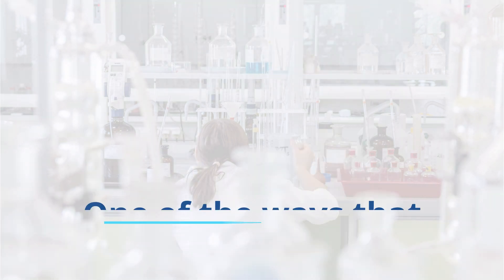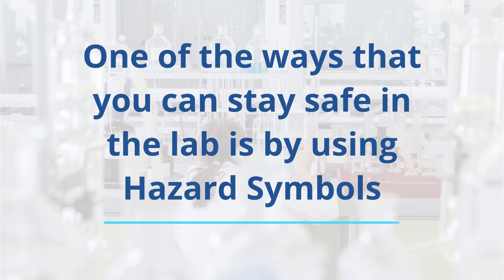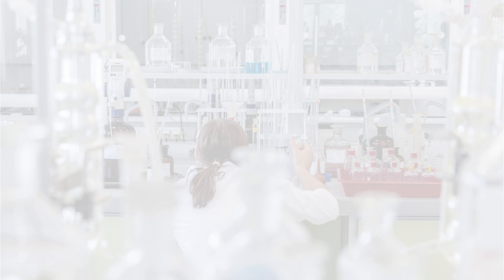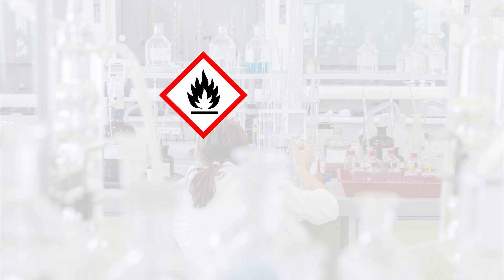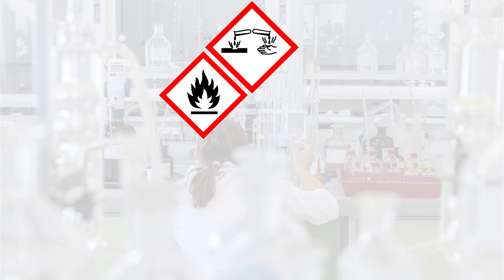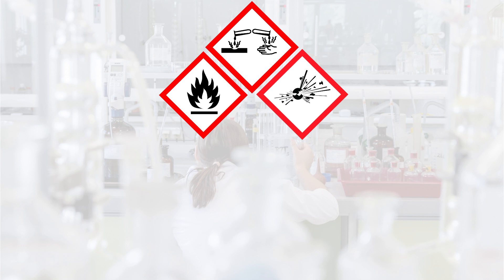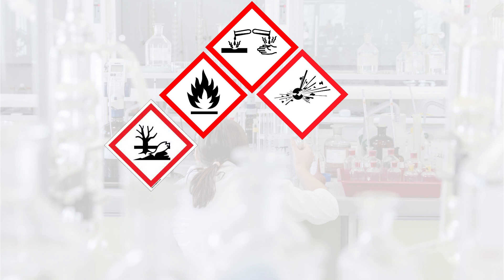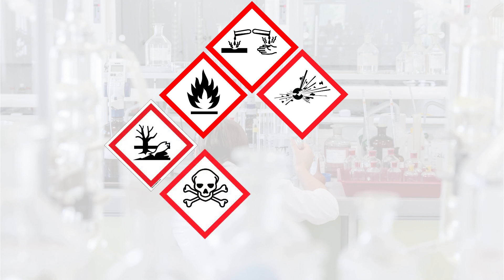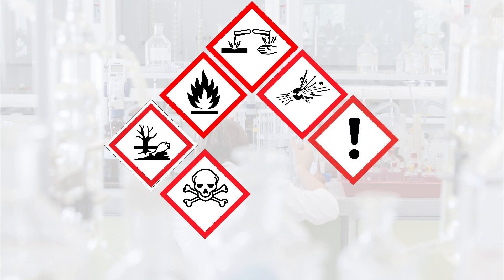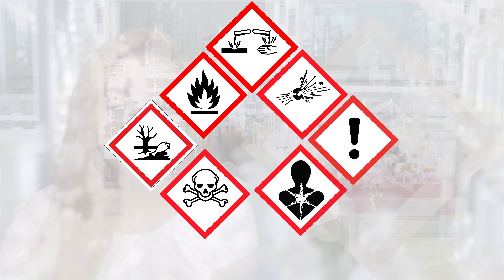One of the ways that you can stay safe in the lab is by using hazard symbols. Let's have a look at a few together. These hazard symbols mean flammable, corrosive, explosive, environmental hazard, acute toxicity, moderate hazard, and health hazard.